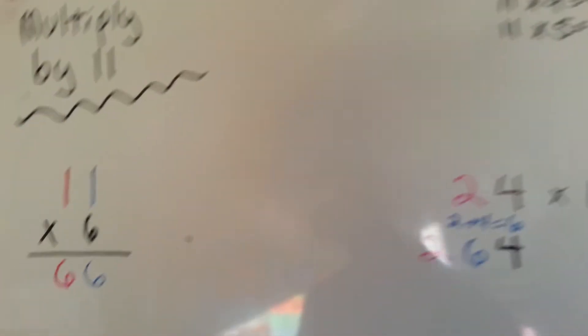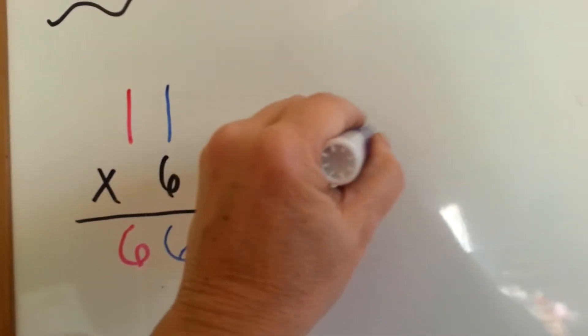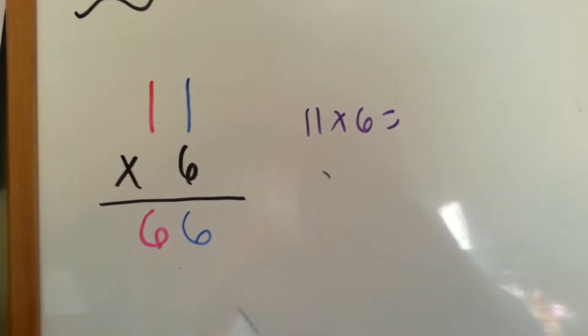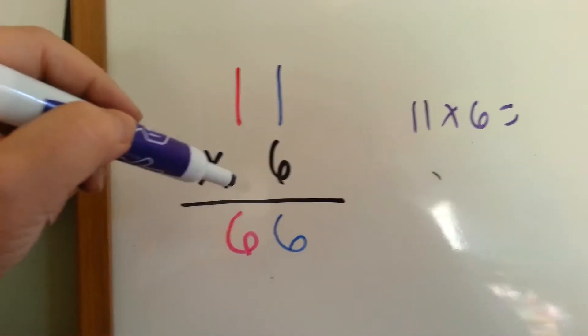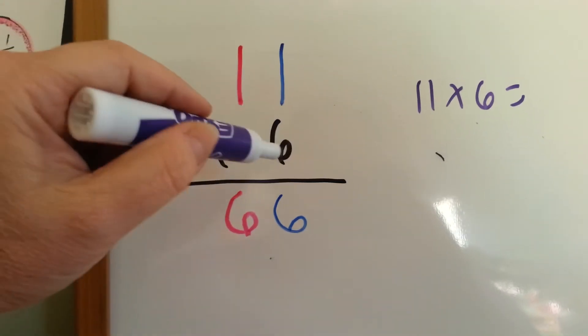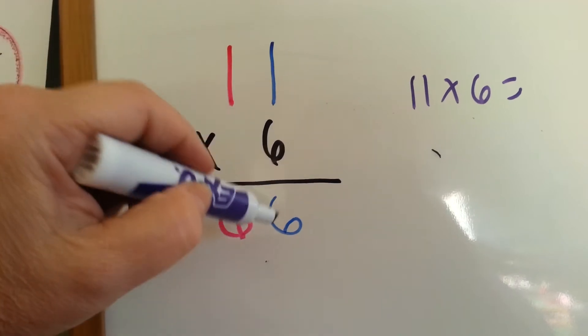What I'm going to show you right now is multiplying this way. Normally, you've seen multiplying this way, but I'm going to show you this way. When you see them stacked like this, what you do is you multiply the ones column, 6 times 1, and you get 6.